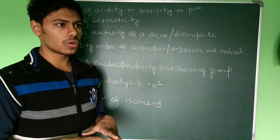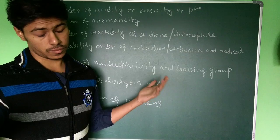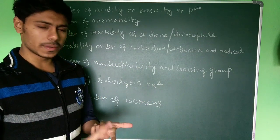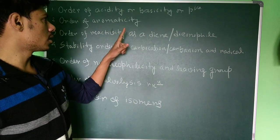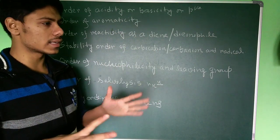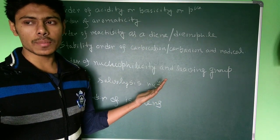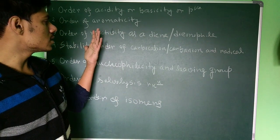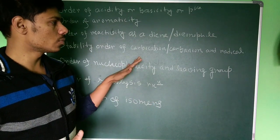Again, you can practice it from Peter Sykes, Jerry March, and Carey Sundberg. This part like acidity, basicity, and carbocation, carbanion, and radical, they are related. When you have to compare the basicity order, basically you have to compare the stability of carbanion. When you have to compare the acidity, it's about stabilization of a negative charge.